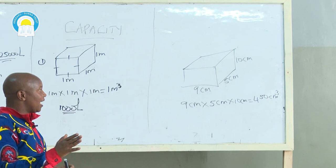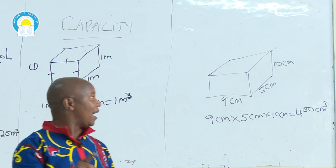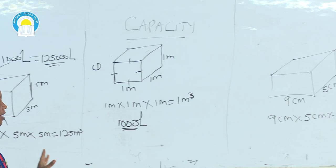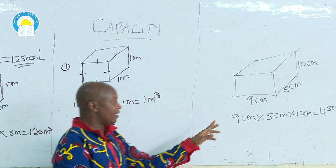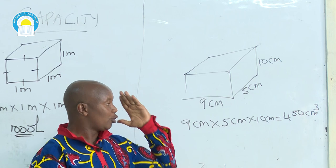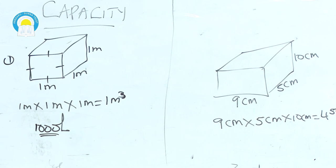The volume of a cuboid is length multiplied by width multiplied by height. A cuboid has length, width, and height, but a cube has only one size because all sides are the same. So the volume in our case is 9 cm × 5 cm × 10 cm, which is equivalent to 450 cubic centimeters.